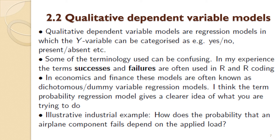Qualitative dependent variable models are regression models where the Y variable can be categorised into two categories, like yes/no or present/absent. More interesting examples include high score vs. not a high score, or Islamic bank vs. non-Islamic bank. Similar terminology can be confusing — in R the terms successes and failures are often used, which are probably the best terms. In economics and finance these are called dichotomous or dummy variable regression models, but probability regression models is a better description of what's actually happening.